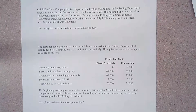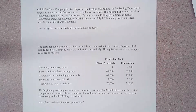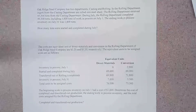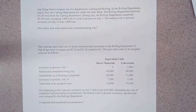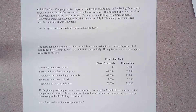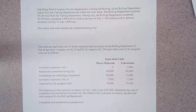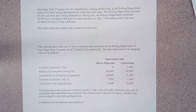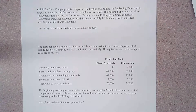The rolling department received 45,300 tons from the casting department — these are going from one department to the other. During July, the rolling department completed a total of 49,300 tons, including 5,800 tons of work in process on July 1st. The ending work in process inventory on July 31st was 1,800 tons.